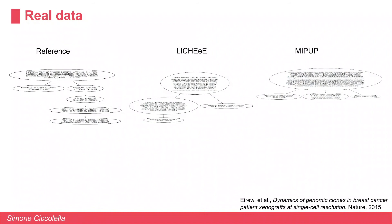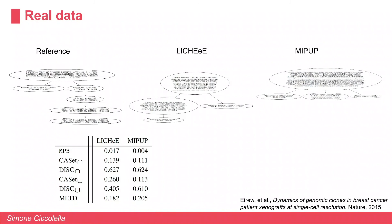Now looking at breast cancer data, once again we have the reference, LICHEE, and MP3 trees. Even from this graphical view we can see these three trees are not very similar — neither in labeling nor in topology. We expect a lower similarity between the reference and LICHEE and MP3. We can see this in particular in the MP3 and CASETTE measures, and to some extent the MLTED measure. However, the DISC measure tends to give a high similarity score in this example.